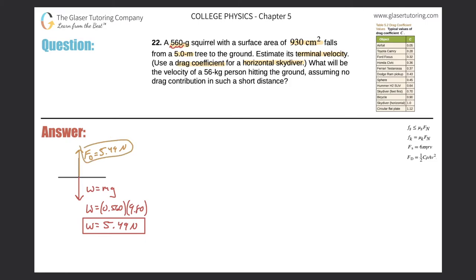So now let's start calculating this terminal velocity. Remember, we use the force of drag formula. So we got the force of drag equals one half, coefficient of drag multiplied by the density of the fluid the object is traveling in, multiplied by the surface area that is facing the motion, multiplied by the velocity squared. So since I'm plugging in this value for the force of drag, and that equals the weight, that means I'm solving for terminal velocity. So this is 5.49. That equals now one half, the coefficient of drag. They said to use it for a horizontal skydiver. So look at the table. Here's the skydiver horizontal. It has a value of one.